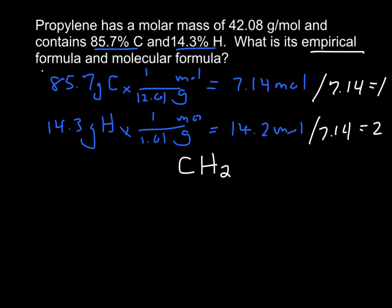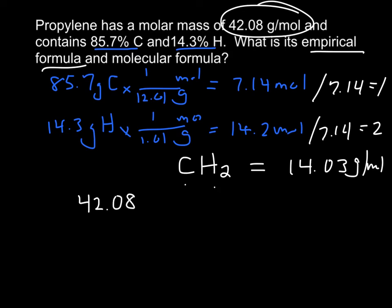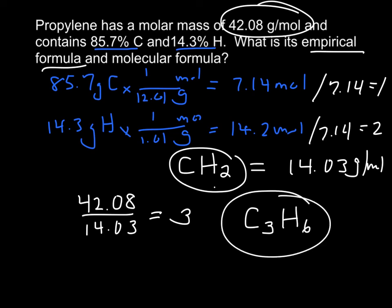So I've got the empirical formula now. Now to find the molecular formula, I have to use the molar mass they gave me. So I take CH2, and I take 12.01 plus 2 times 1.01, and this comes out to be 14.03 grams per mole. So I take 42.08, the big number divided by the little number, 14.03, and this comes out to be 3. Remember, it has to be a whole number. I think it's probably 2.99, but that's a whole number. So I have to multiply this by 3, so C3H6. So now I've got the molecular formula, which is what my goal is.